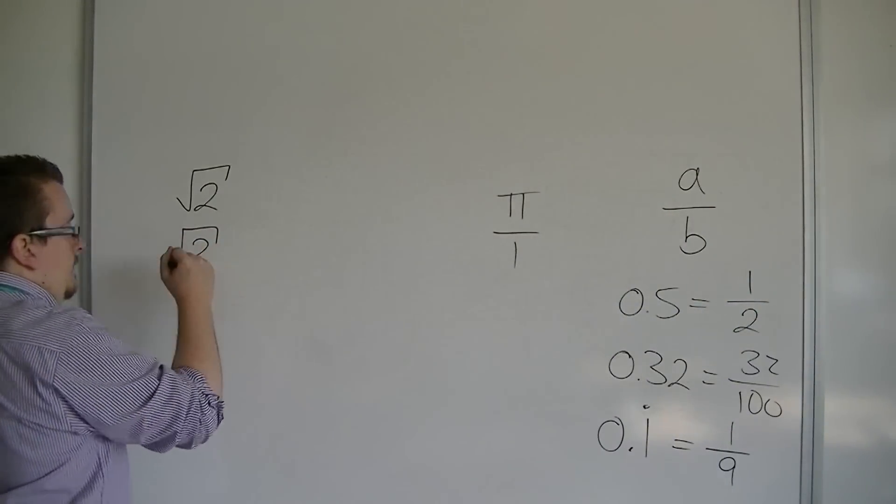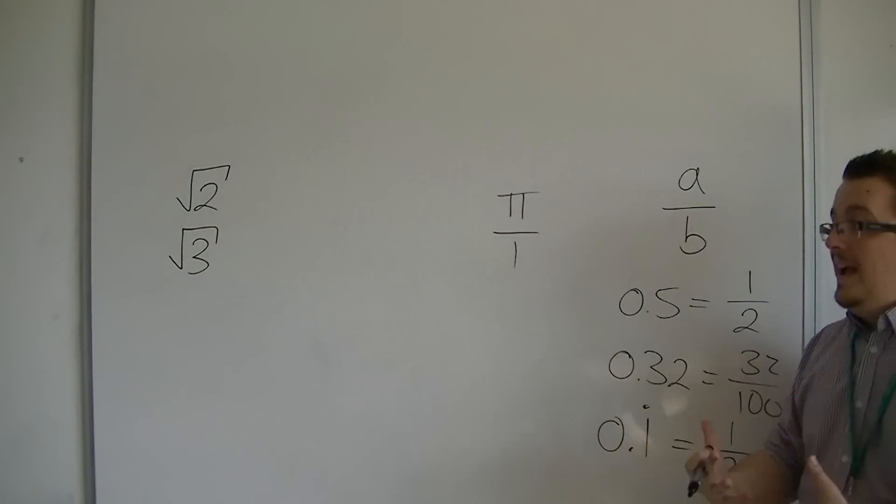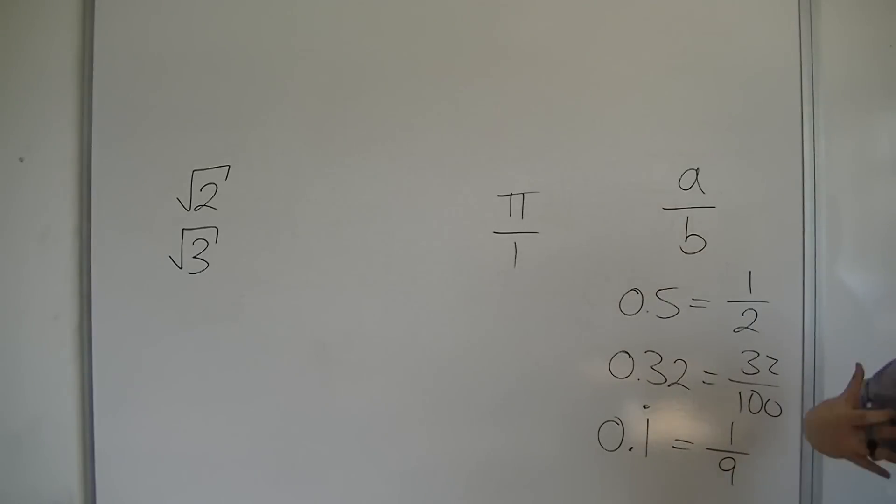Root 3 is, in a similar way, a surd that cannot be simplified. It's an irrational number. It cannot be simplified further.